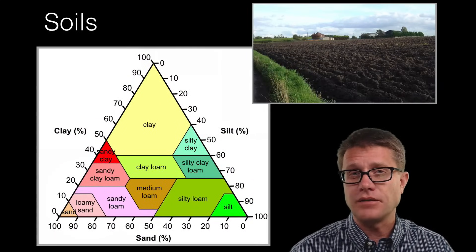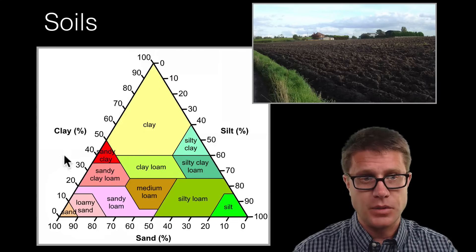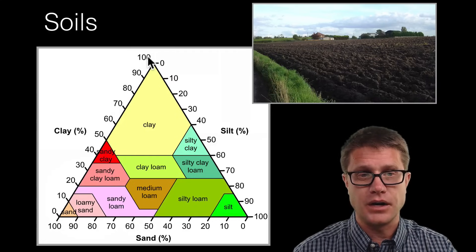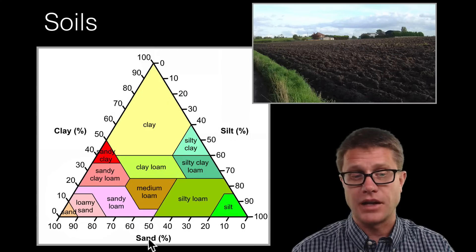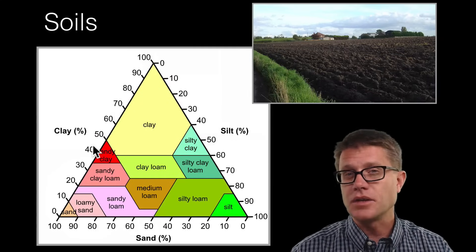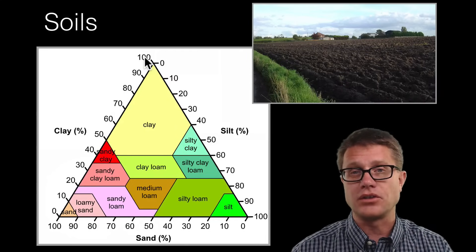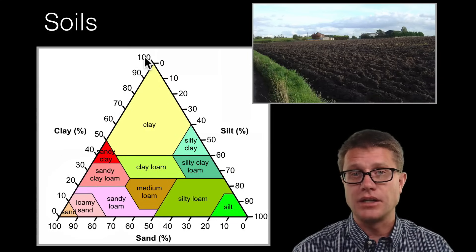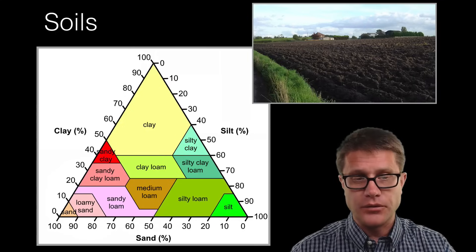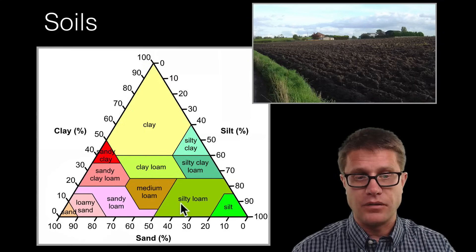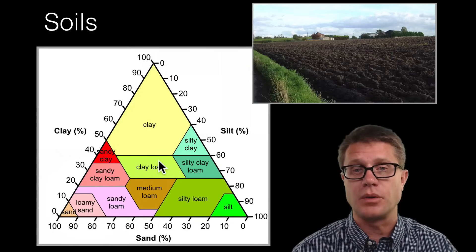Now we can classify soil based on which of these particles we have. This chart takes a second to get used to. The clay is on the left side from 0% to 100%, the silt is on the right side, and then the sand down below. Remember in particle size sand is biggest, then silt and then clay. Anything that has 50% or higher clay we just call that soil clay, and we are not going to have good drainage — this is not going to be a great place to grow crops. What is the perfect soil? Well if we have got about 20% clay and about 40% of sand and silt we have what is called a loam, and that is going to be a nice balance of all those particle sizes.